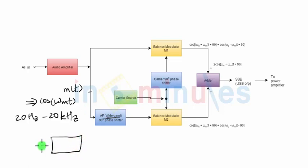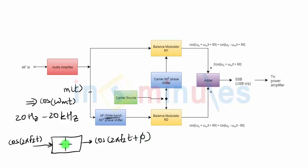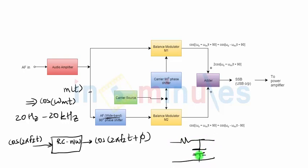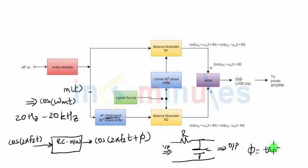Let us quickly discuss how to design a phase shifter. If my input signal is cos(2πf₁t), then my output will be cos(2πf₁t + φ), where the extra phase shift φ is provided by the phase shifter block. A very commonly used phase shifter is the RC network. If I take a simple RC circuit — input applied, with R and C — and take the output across C, the output has a phase difference φ with respect to the input, where φ = tan⁻¹(Xc/R).